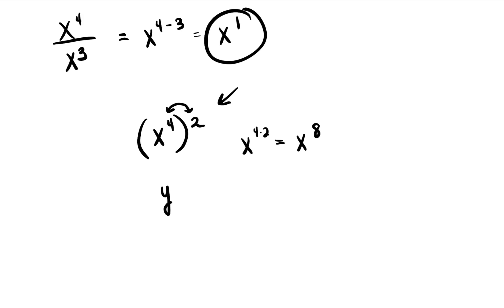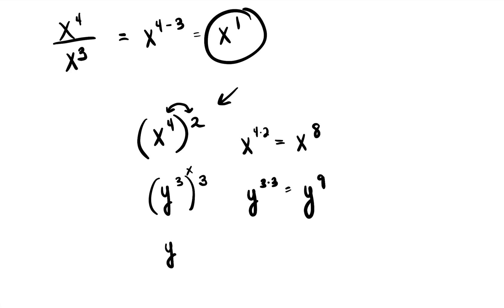So if I asked you: y to the third power in parentheses with a three on the outside — what answer would you get? If you multiply those, you would get y to the three times three, which is y to the ninth power.